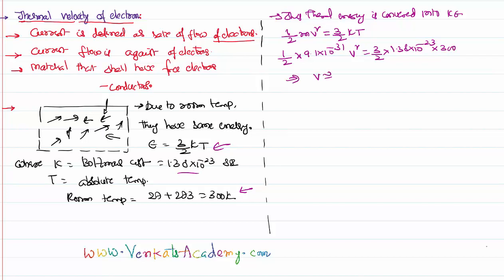If you calculate this, you will get velocity of electron approximately as 10^5 meter per second. This velocity is called something like thermal velocity. See, this is a very big velocity, thermal velocity.